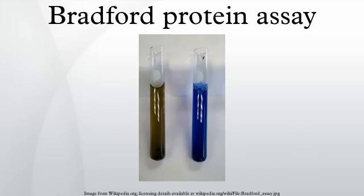This causes an increase in the absorbance at 595 nm independent of protein presence. Other interference may come from the buffer used when preparing the protein sample. A high concentration of buffer will cause an overestimated protein concentration due to depletion of free protons from the solution by the conjugate base from the buffer. This will not be a problem if a low concentration of buffer is used.